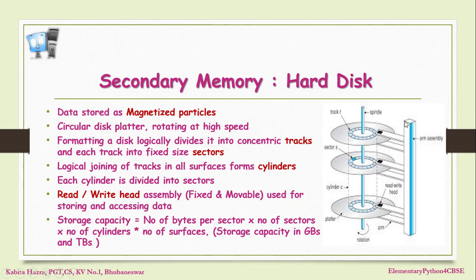There is a read-write head assembly for reading and writing data. This read-write head may be fixed or movable. If fixed, there is a read-write head assembly for each track or cylinder. If movable, there is only one read-write head which moves in and out across the disks. The storage capacity of a hard disk is determined by: bytes per sector × number of sectors × number of cylinders × number of surfaces. The upper and lower surfaces of the outermost disk are not used for storage of data.